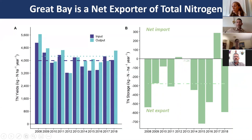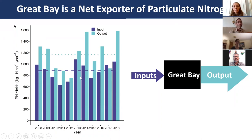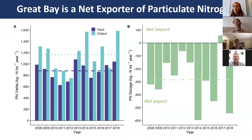Similarly, particulate nitrogen also exhibits net export behavior from Great Bay—inputs are less than outputs. The particulate nitrogen yield plot shows that on average, inputs are less than outputs, indicating Great Bay is producing some additional internal source contributing to that net export. Looking at delta storage, almost every year except 2017 shows net export status with a negative delta storage value.